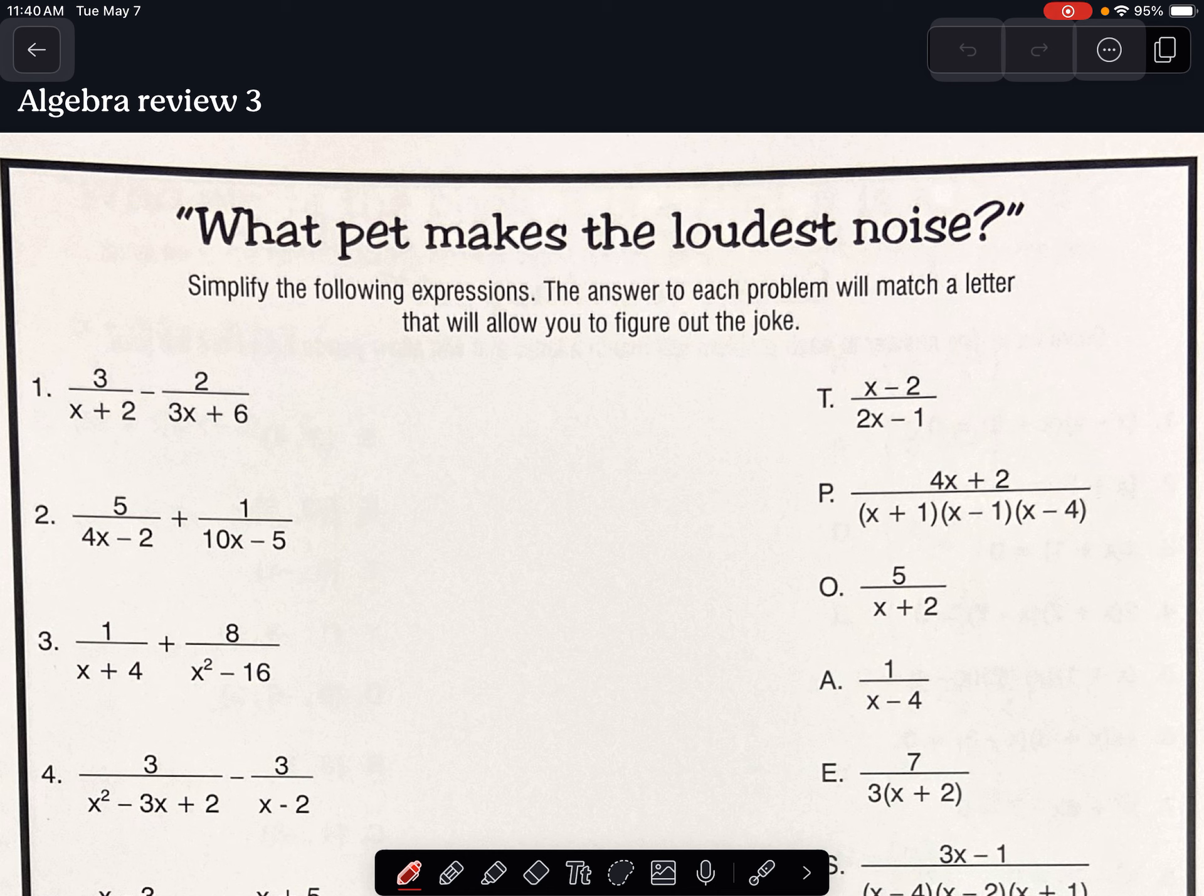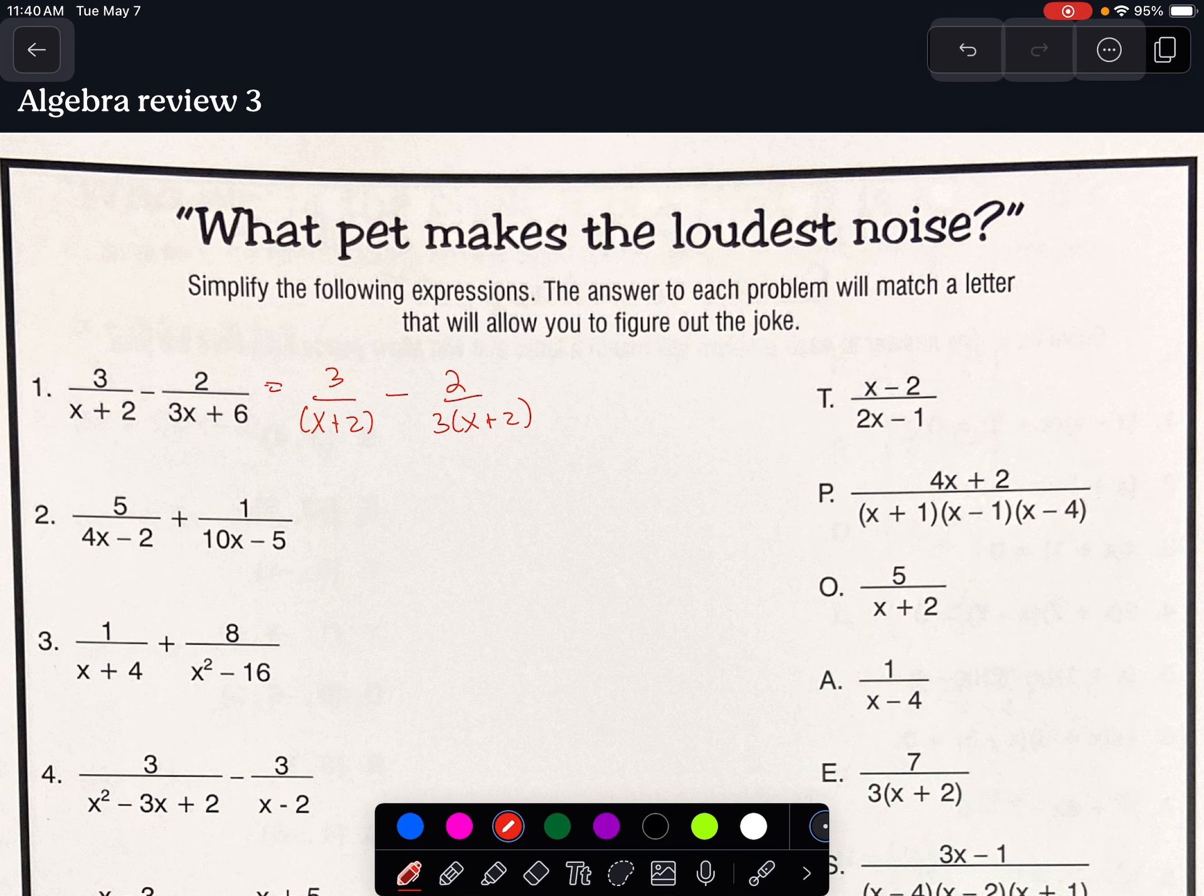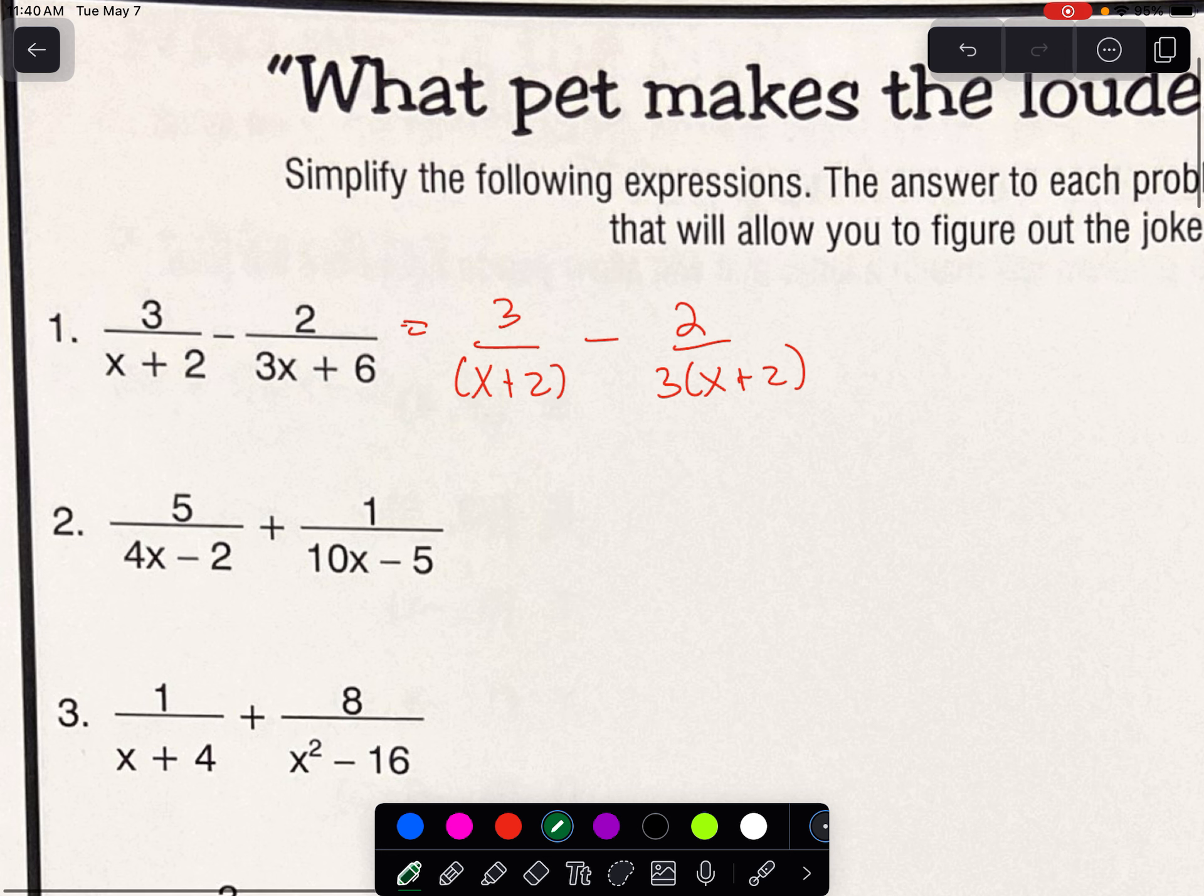In the third algebra review, the first thing we need to talk about is adding or subtracting rational expressions. To add or subtract rational expressions, you want the bottoms to be in factored form so that we can see if they have a matching factor. You'll notice if we put this first one here into factored form that they both already have an x plus 2.